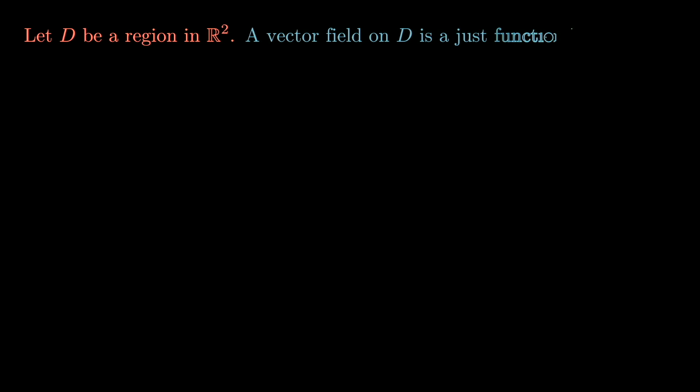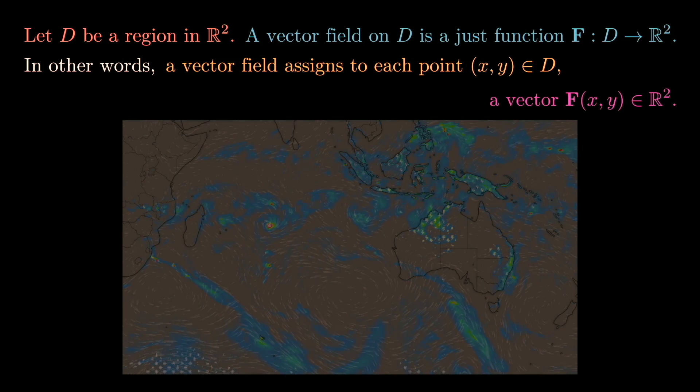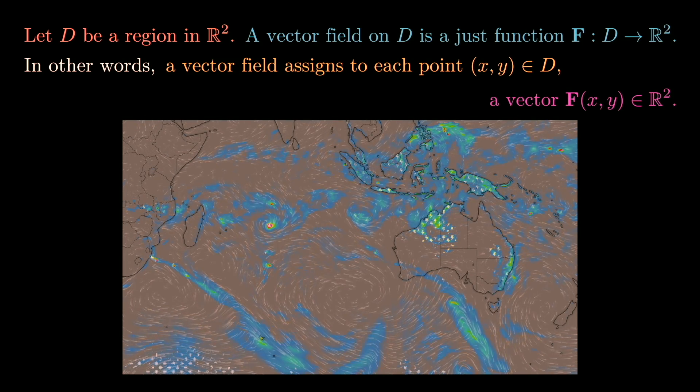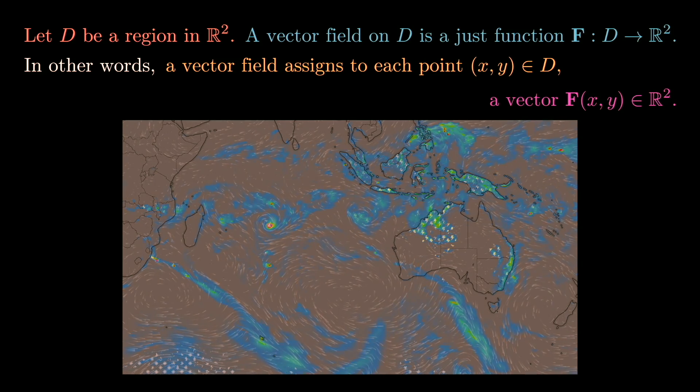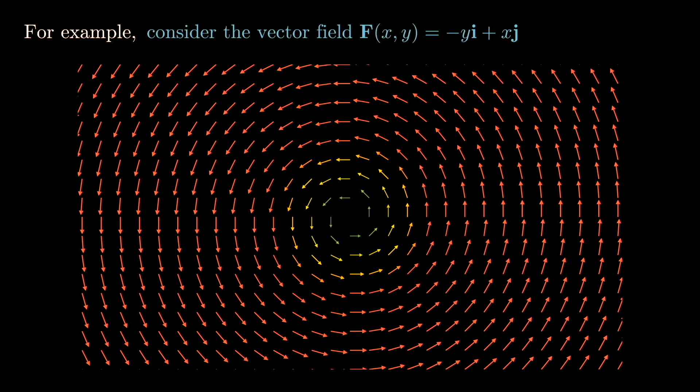Let D be a region in R2 — imagine a disk. A vector field on this region is a function which assigns to every point a vector in R2. The image to have in mind is a weather map: every point on the map gives the direction the wind is blowing. For example, the vector field F(x,y) = -y î + x ĵ gives a rotational vector field.